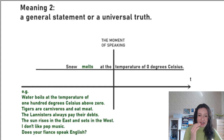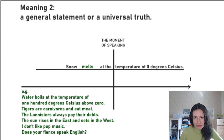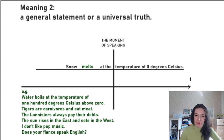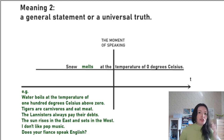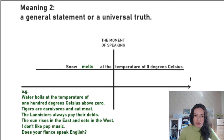The second meaning is also paradigmatic — we understand it with very little context. It's a general statement or a universal truth, which are a little bit different but not that much. These are actions which take place all the time. If I say 'snow melts at the temperature of zero degrees Celsius' — today, yesterday, and tomorrow the melting temperature of snow is still going to be the same. This is a permanent fact of life.